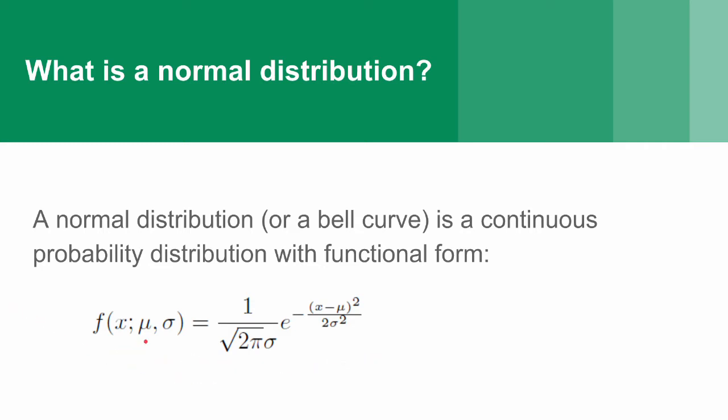Now, mu, it's a curly U, is the mean, and sigma, it's a little O with a tail on it, is the square root of the variance, or the standard deviation.